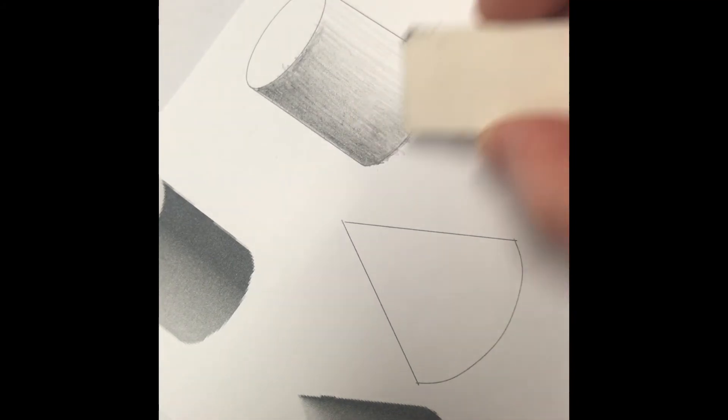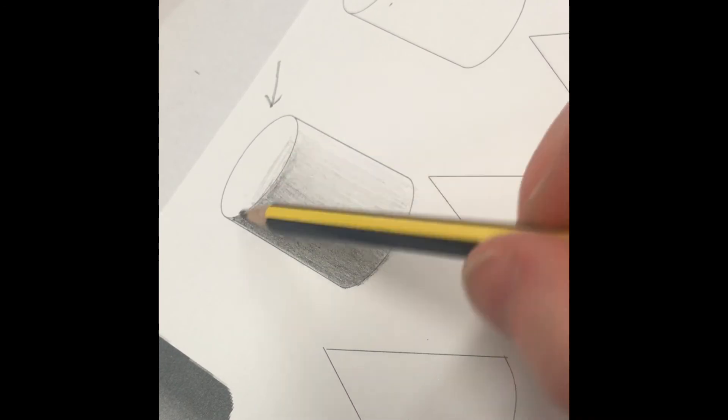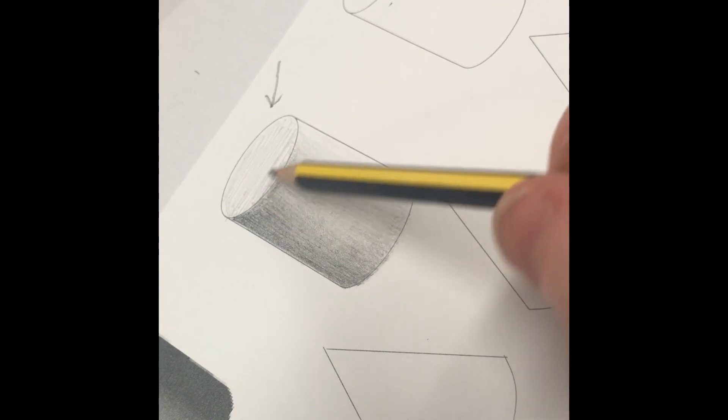Once you have finished shading, use a rubber to touch up any little areas where you might have went over the line. On the top of the cylinder, shade straight across the top and as lightly as possible.